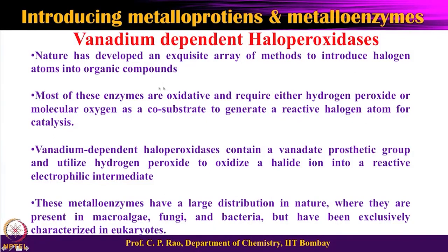Haloperoxidases are quite popularly known, particularly from their presence in sea algae, where many organic moieties in the ocean are converted to halogenated ones. This could be chloro, bromo, or iodo — giving chloroperoxidase, bromoperoxidase, and iodoperoxidase. These form the general class of haloperoxidases.